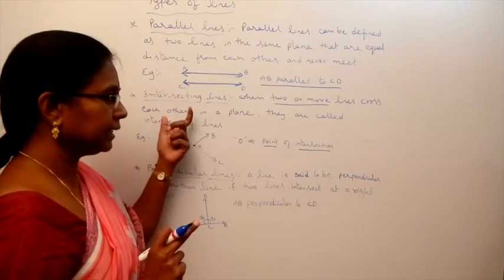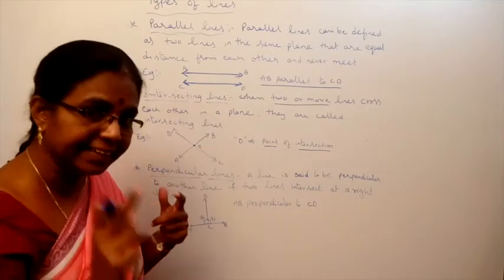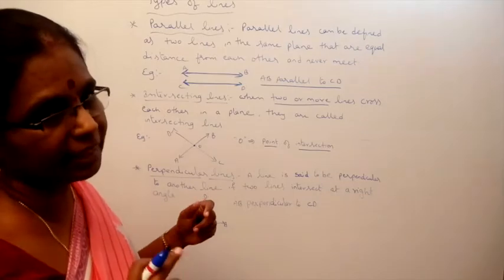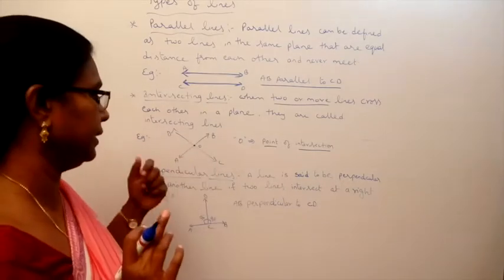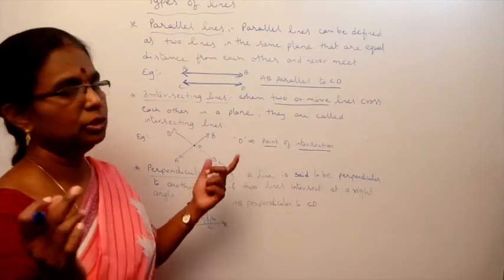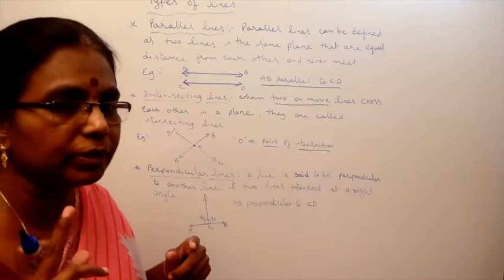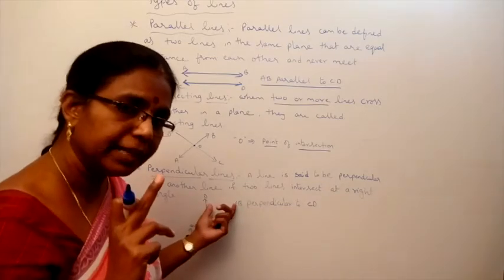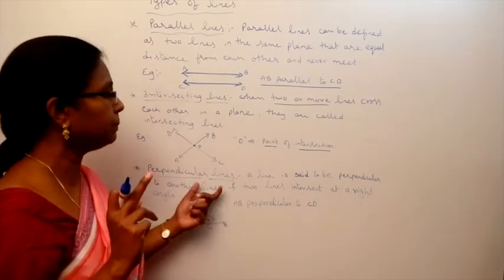Perpendicular lines are intersecting lines, but intersecting lines are not always perpendicular. Only when two intersecting lines meet at 90 degrees are they called perpendicular lines. To summarize: parallel lines never meet and have equal distance anywhere; intersecting lines cross at one point called the point of intersection; perpendicular lines are intersecting lines that meet at 90 degrees.